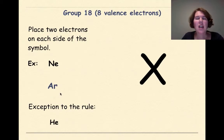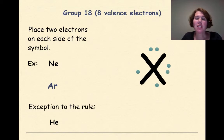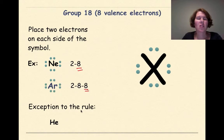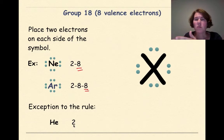Group 18 has 8 valence electrons, which is the maximum number of dots you can put around a symbol — so each side just gets 2 electrons. Neon is 2, 8 — 8 valence electrons. Argon is 2, 8, 8 — 8 valence electrons. The only exception in group 18 is helium, which has an electron configuration of just 2. Since only 2 electrons max can fit in the first shell, helium only has 2 electrons and not 8.